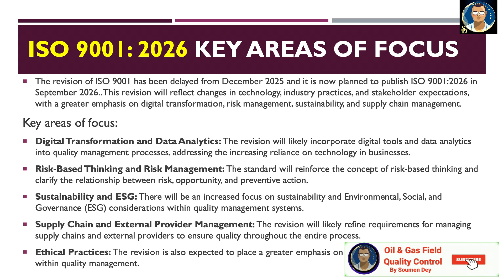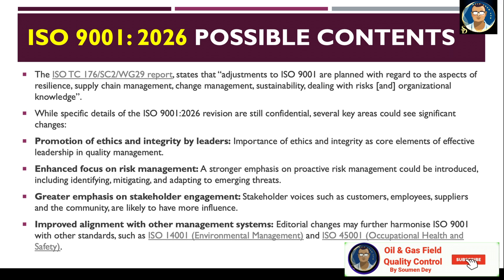The possible contents of ISO 9001:2026: the ISO TC-176-SC2-W229 report states that adjustments to ISO 9001 are planned with regard to resilience, supply chain management, change management, sustainability, dealing with risks, and organizational knowledge. While specific details of the ISO 9001:2026 revisions are still confidential, several key areas could see significant changes, including promotion of ethics and integrity by leaders, enhanced focus on risk management, greater emphasis on stakeholder engagement, and improved alignment with other management systems.